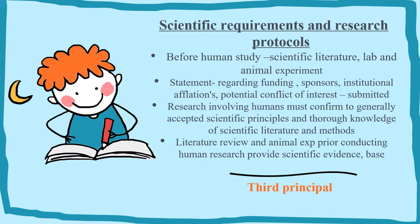The third principle is Scientific Requirements and Research Protocol. First, you must study the existing scientific literature and review lab and animal experiments before conducting research on humans. For example, if you want to study yoga and its health effects, you must first check how much work has already been done. You must also include a statement regarding funding, sponsorship, institutional affiliations, and any potential conflicts of interest. All research details must be submitted. You must follow scientific principles, and a literature review along with animal experiments should provide the scientific evidence base prior to conducting human research.